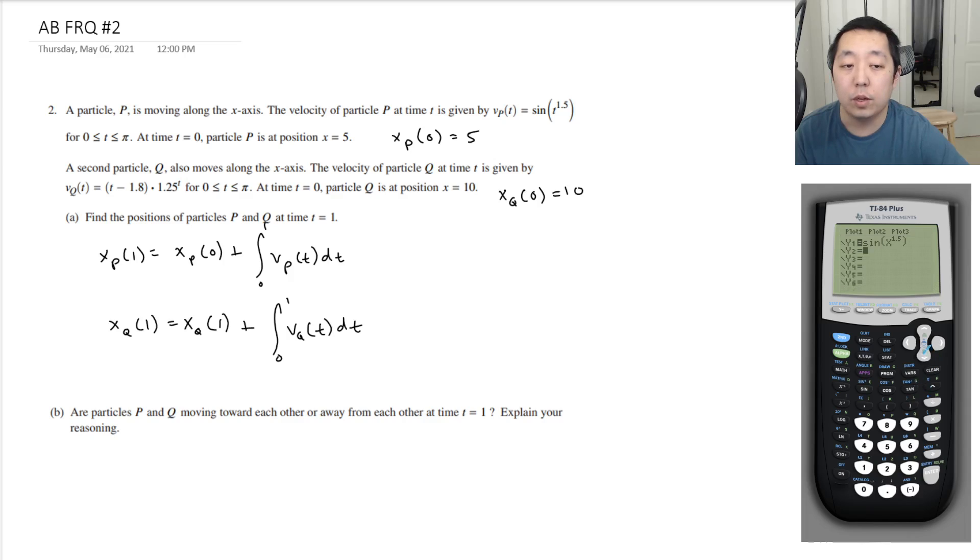The second one is going to be x minus 1.8 times 1.25 raised to the x.